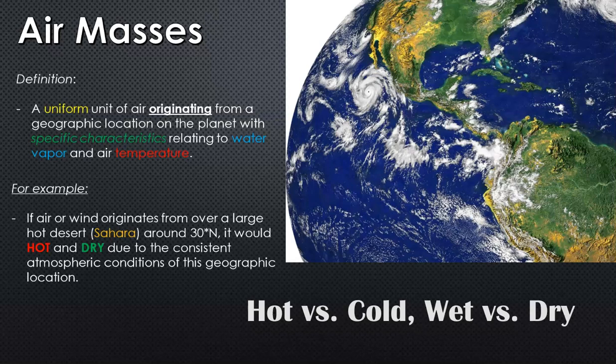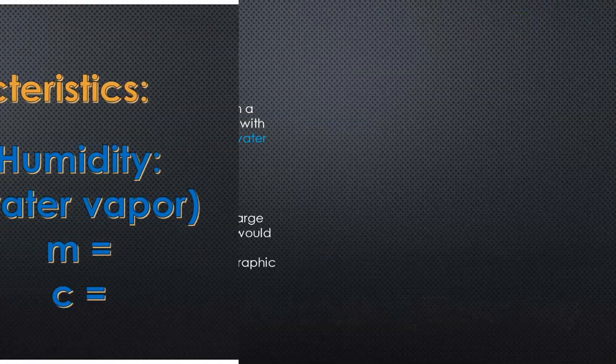If you're in the Mediterranean or Tenerife, when the air comes over off the Sahara, it's going to be a different condition than if the wind or air mass comes off the Atlantic Ocean, which is going to be a lot colder and definitely a lot more humid and wet.